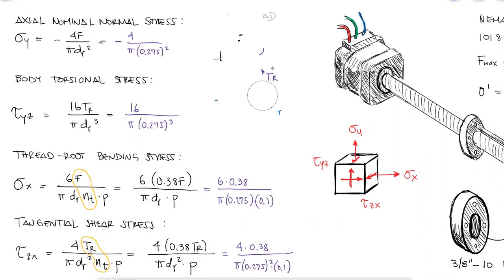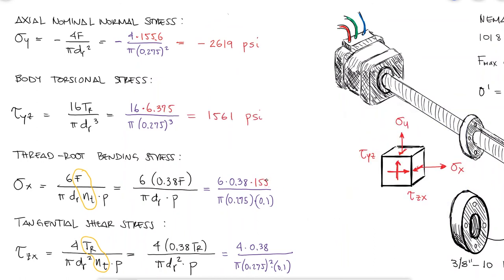We find an axial stress of minus 2.6 ksi, a torsional stress of 1.56 ksi, a bending stress of 4.1 ksi, and a tangential shear stress of minus 0.4 ksi.